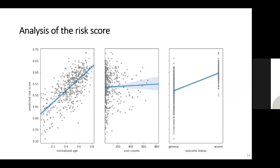For further investigation of the predicted risk score, we plotted patients' predicted risk scores against their conditions such as age, total hospital visit counts, and outcome status. Risk score increased with increasing age, and this positive relationship is statistically significant. Severe patients showed higher risk scores, and this relationship is also statistically significant. However, there was no meaningful relationship between total hospital visit counts and predicted risk score.